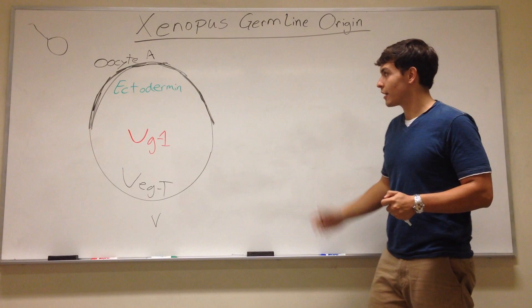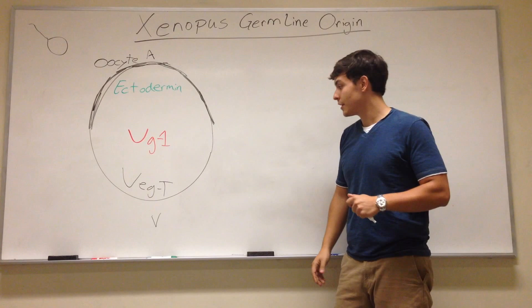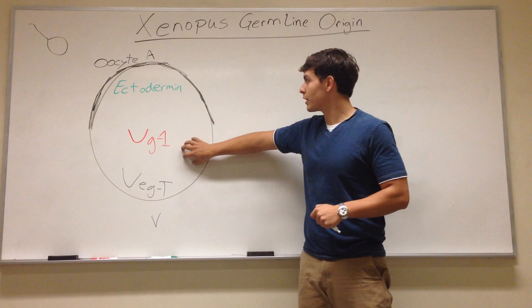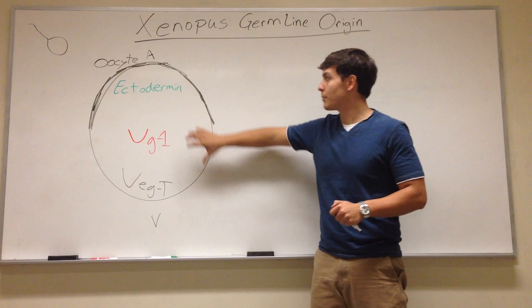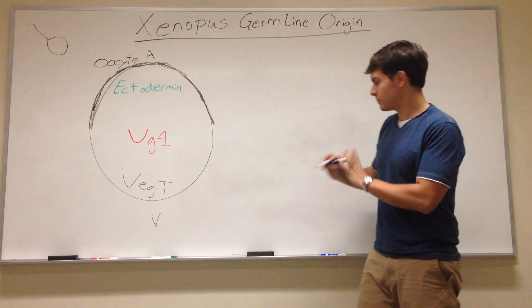So these are the three main maternal determinants that we need to be concerned about. And it's very easy to see how they got their names. Ectodermin's up top which eventually this area is going to be fated to become the ectoderm. And the veg is in the vegetal pole. We're going to get back more into how these actually interact and what they do. But for now just know that these are the three main ones present before fertilization.